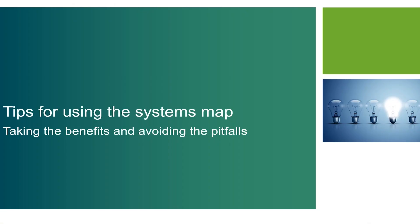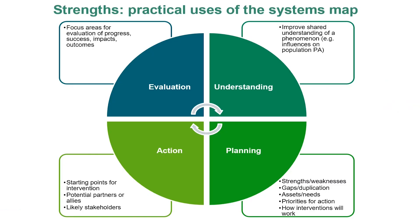In this section we'll consider how this tool can be used by looking at its strengths as well as some potential pitfalls to avoid. The strengths and practical uses of this systems map include understanding; planning — for example, identifying assets, needs, and priorities for action; action — identifying starting points for intervention and potential partners or allies; and evaluation — for example, identifying which areas will be the focus.